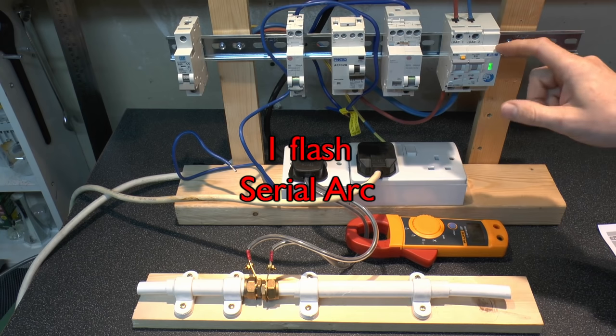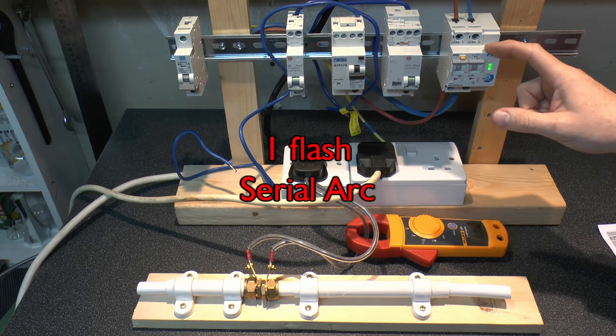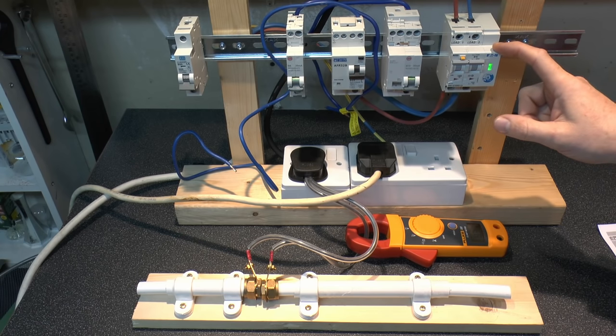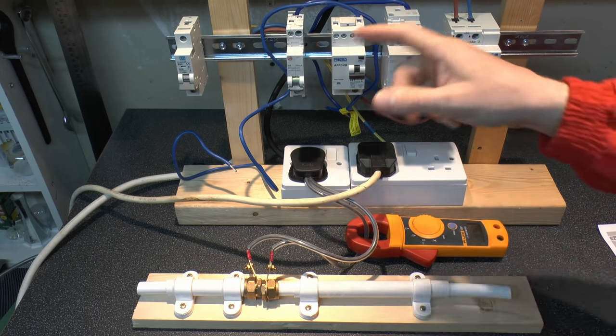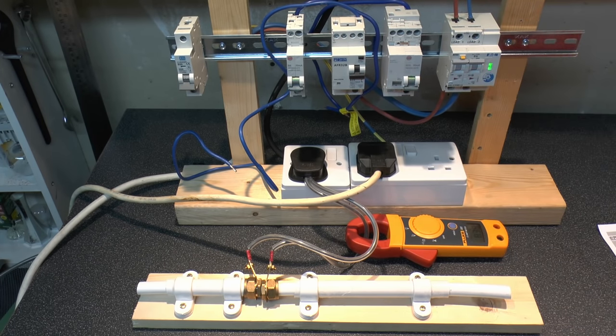And it's worth being aware that these devices are traditional circuit breakers, so you've got overload and short circuit protection in there. And these also have an RCD included as well. And it's a type A, and that's the same for all of these devices. So this is really a three-in-one device that does everything.